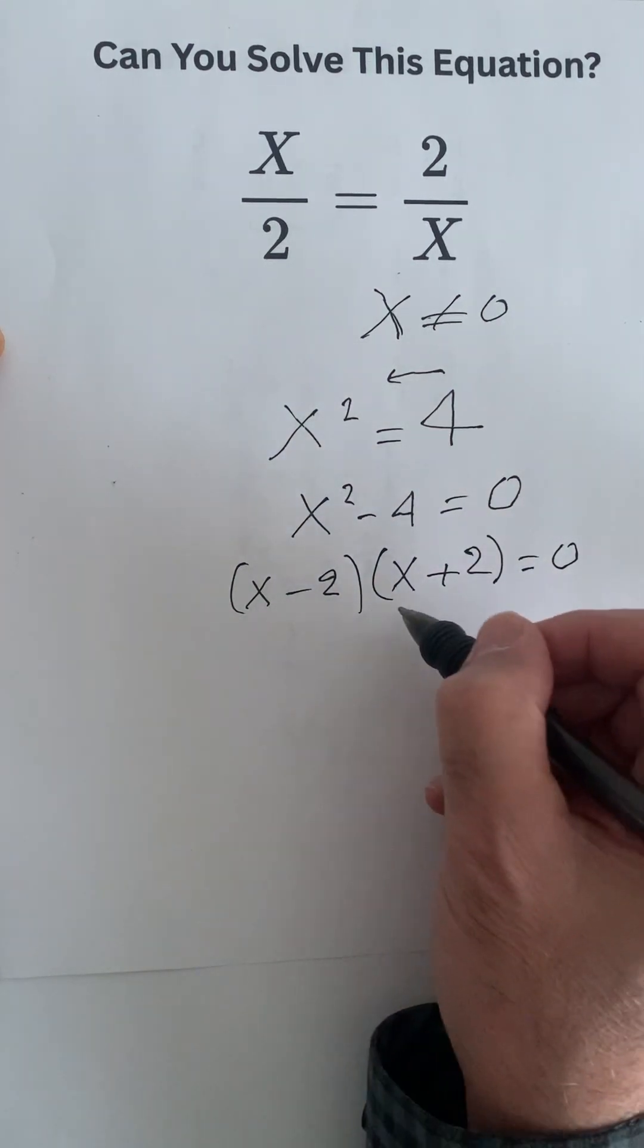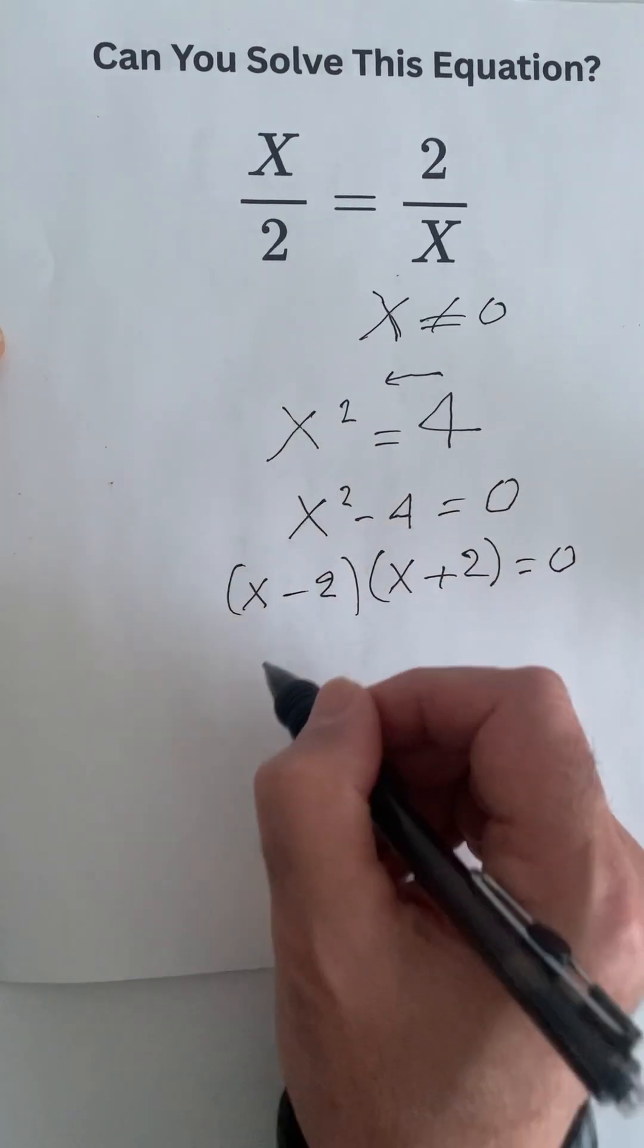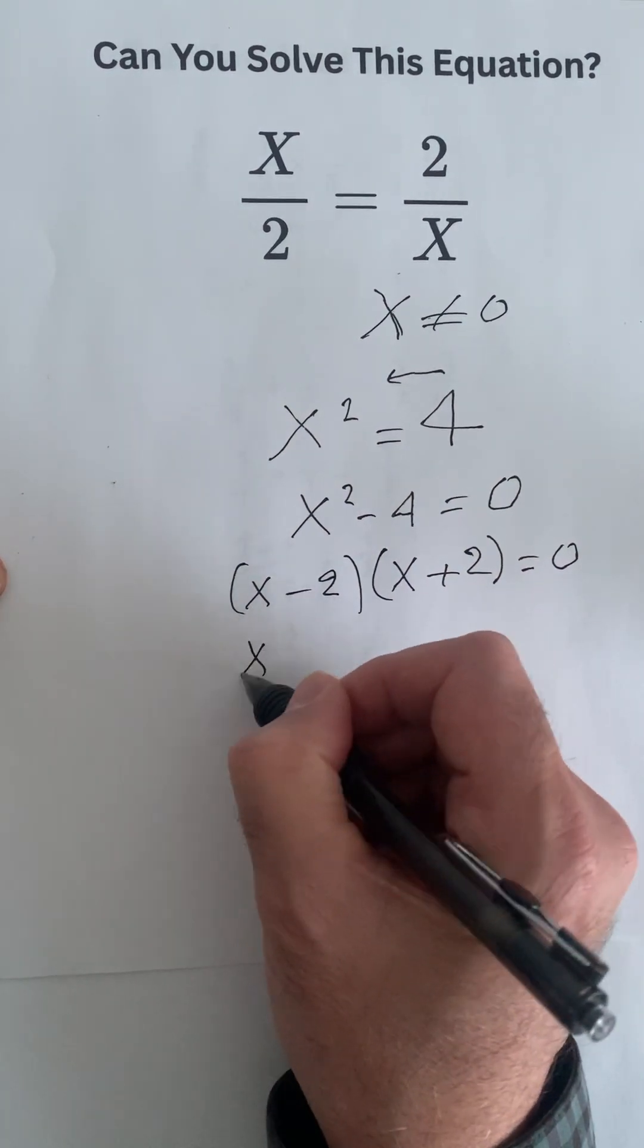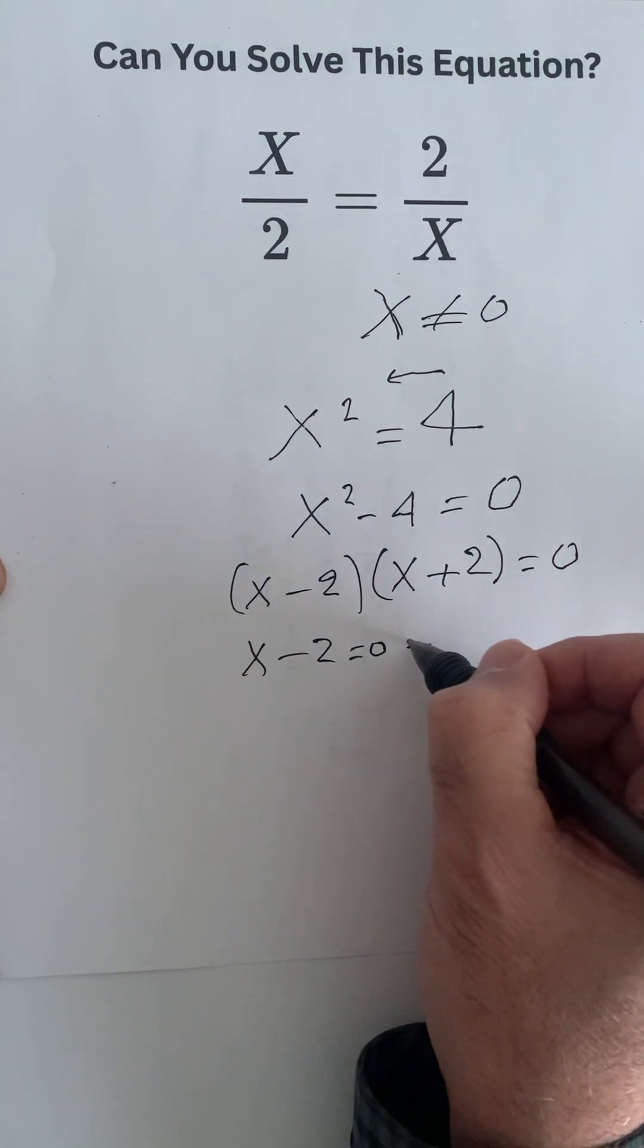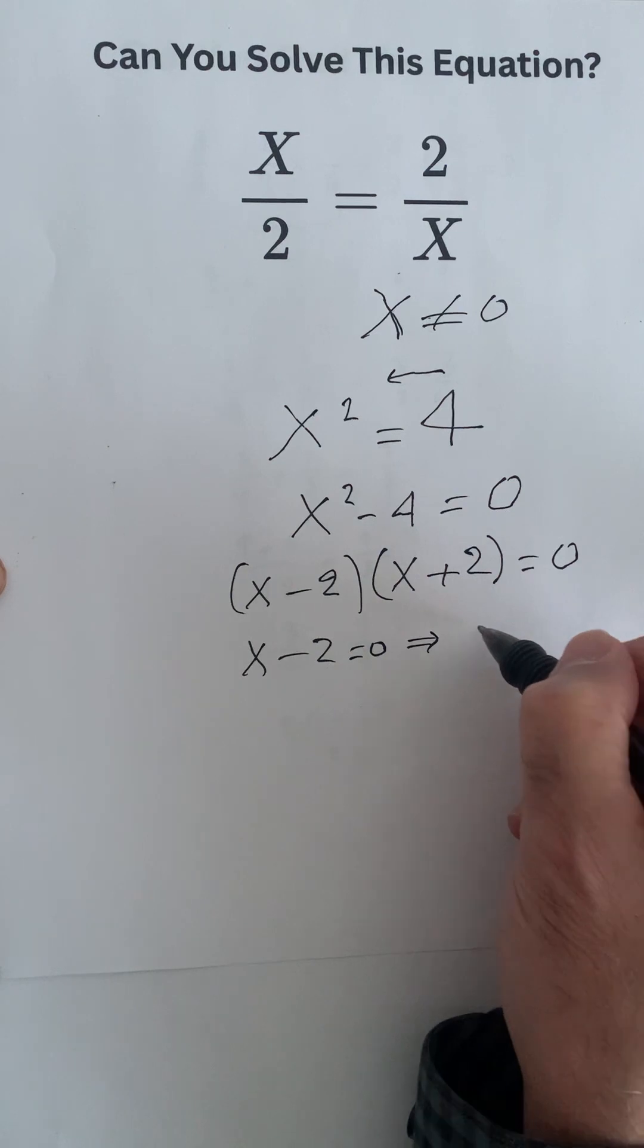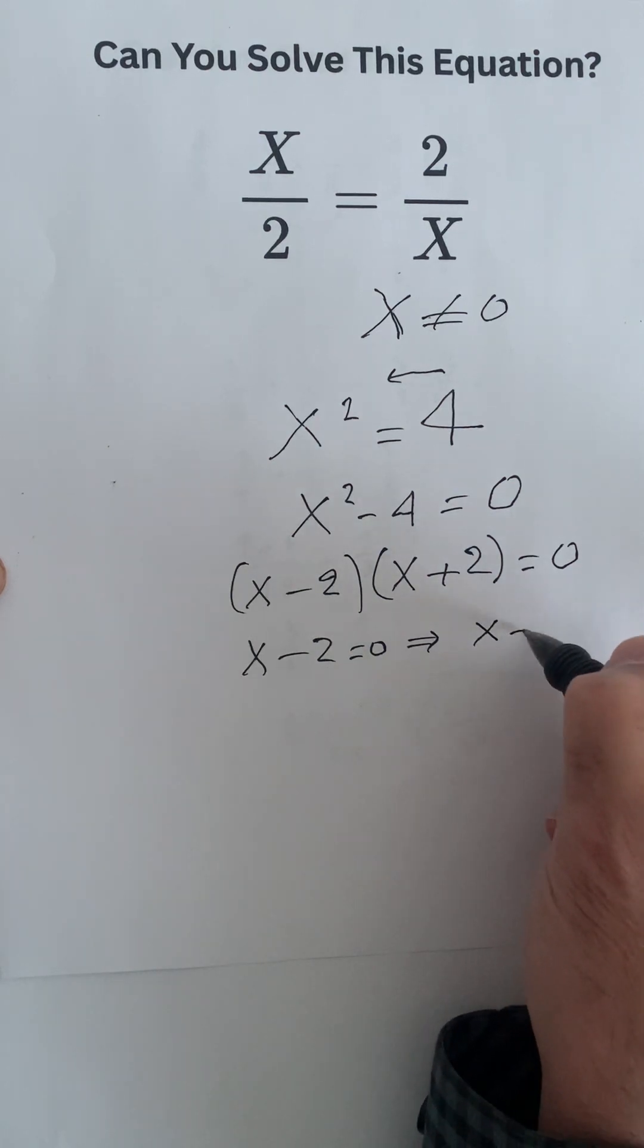So what we will have in this case is a product of two terms that is equal to 0, so either one of the products is equal to 0. So first we have x minus 2 equals 0, and that gives us x equals 2, and that's one of the solutions.